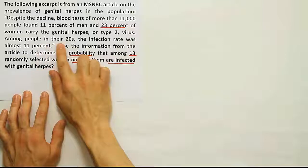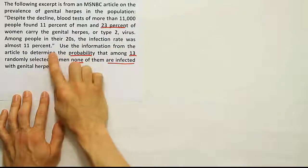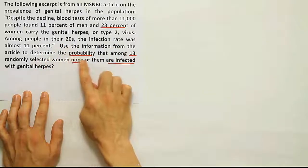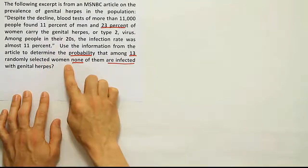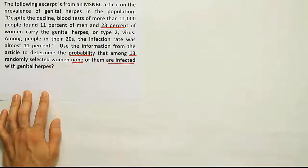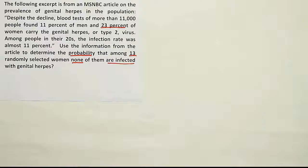Among people in their 20s, the infection rate was almost 11%. Use the information from the article to determine the probability that among 13 randomly selected women, none of them are infected with genital herpes.